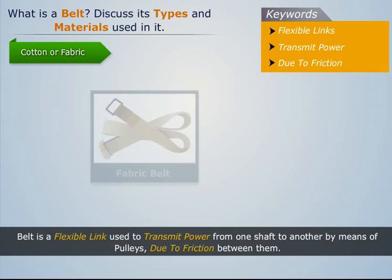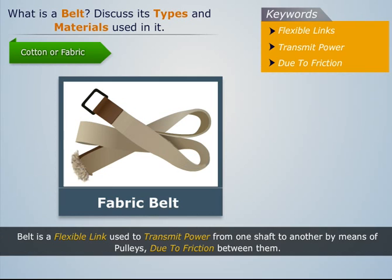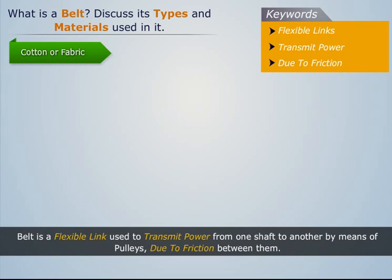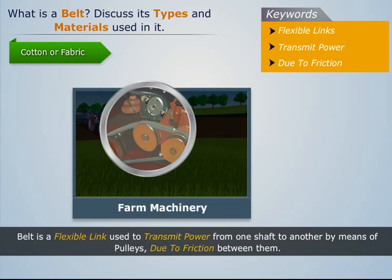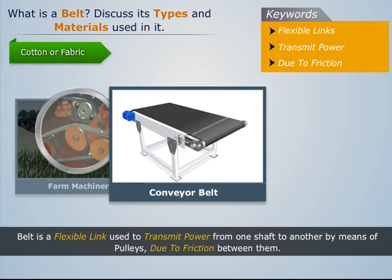Cotton or fabric: Most fabric belts are made by folding canvas or cotton duck into three or more layers, depending upon the desired thickness, and stitching them together. These belts are commonly used in farm machinery, belt conveyors, etc.